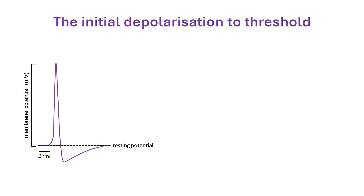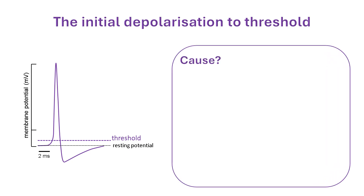I've talked about action potentials being triggered by an initial small depolarisation. In between action potentials, the resting neuron has a membrane potential of around minus 70 to minus 80 millivolts. For an action potential to be triggered, it needs to rise to a threshold level of around minus 50 to minus 55 millivolts. The threshold is the level at which a gradual depolarisation switches to an explosive increase in membrane potential as sodium channels are activated. The exact value varies depending on several factors, such as the type of neuron and its recent activity. Cells in which spontaneous depolarisation occurs are known as pacemakers.